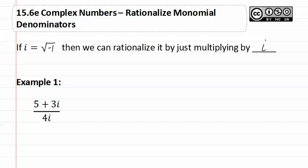Let's see how this works in example one. If we multiply the numerator and denominator by i, we get 5i plus 3i squared over 4i squared.